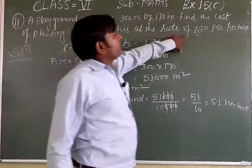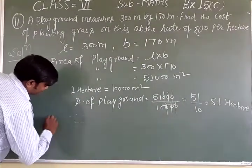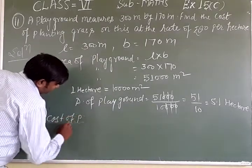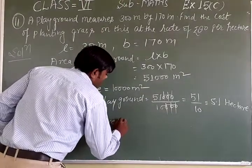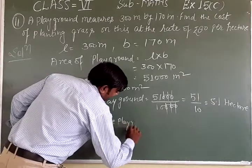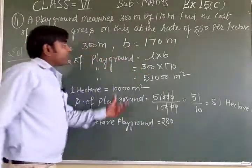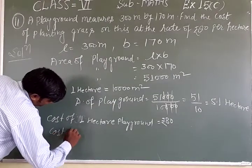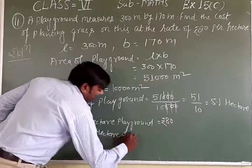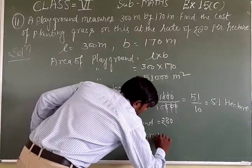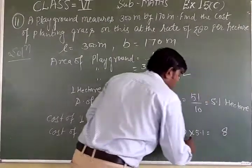Now, planting grass at the rate of 80 rupees per hectare. Cost of 1 hectare of playground equals 80 rupees. So cost of 5.1 hectares of playground equals 80 multiplied by 5.1, which gives us 408 rupees.